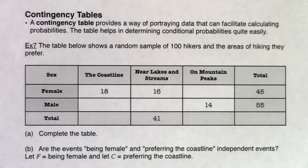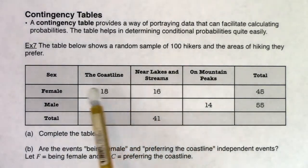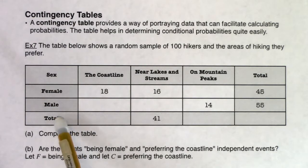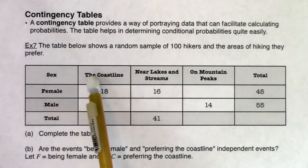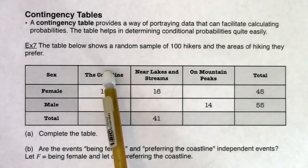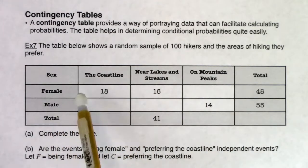The table below shows a random sample of a hundred hikers and the areas of hiking they prefer. There's a bunch of information on it. I've got gender — male and female — and where you prefer to hike: along the coastline, near lakes and streams, or on mountain peaks, and I've got some numbers in here.